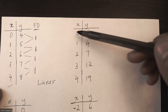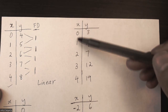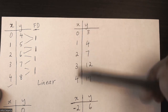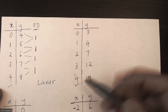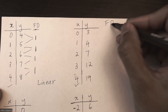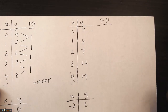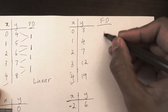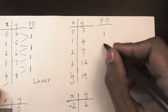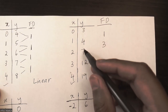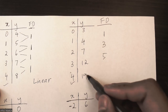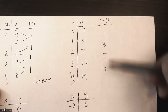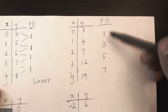Looking at the second problem: again my x values are all increasing by the same amount, so my check is good. I'll do my first differences — second minus first: 7 minus 4 is 3, 12 minus 7 is 5, and 19 minus 12 is 7. Since my first differences are not all the same, the equation is definitely not linear.